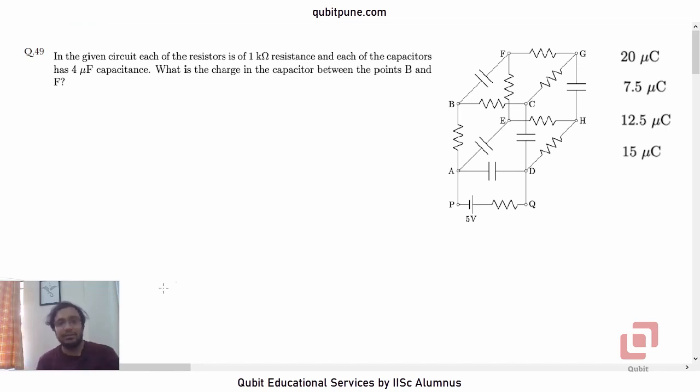In this video we are going to solve the 49th problem which is based on DC circuits involving resistors and capacitors. In the given circuit, each of the resistors is of 1 kilo ohm resistance and each of the capacitors has 4 microfarad capacitance. What is the charge in the capacitor between the points B and F? And we have 4 options, all of them are in microcoulomb.